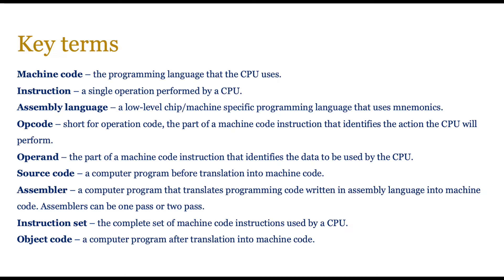Machine code you should already know from IGCSE — it's the programming language that the CPU uses, normally binary. Instructions are single operations performed by a CPU. Assembly language is a low-level, chip or machine-specific programming language that uses mnemonics like ADD and STO. Each instruction has two forms: you have an opcode, which is a short operational code like ADD, and then you have the operand, which is the part of the machine code instruction that identifies the data that the opcode needs to act upon.